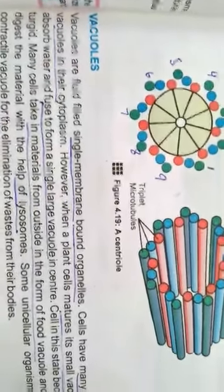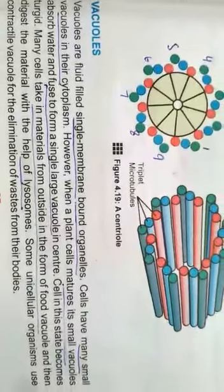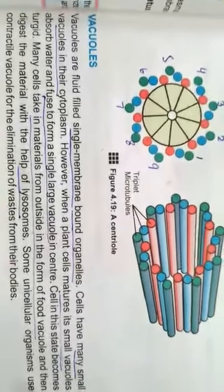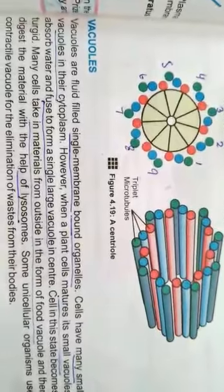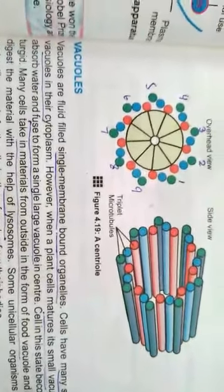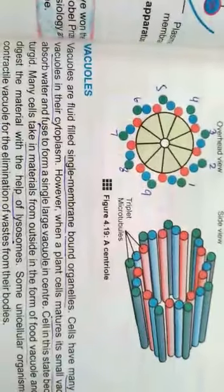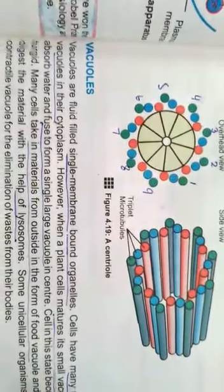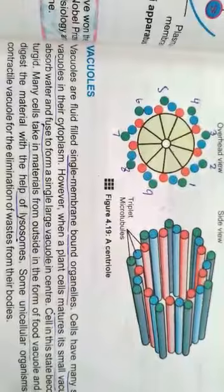But the plant cells have mature vacuoles and small vacuoles. They fuse with each other and then a single large vacuole which is in the center of the cell. We have seen in the animal cells that the nucleus was in the center. So the plant cells have no nucleus in the center, but they have vacuoles in the center of the cell.